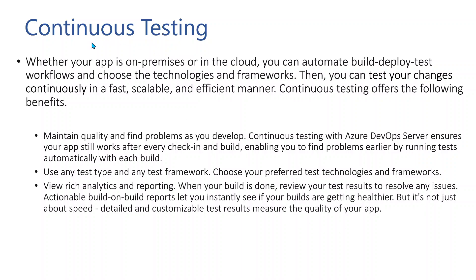Next we have Continuous Testing. As the name indicates, Continuous Testing means you're going to test in an automated fashion. Whether your app is on-premises or in the cloud, you can automate build, deploy, and test workflows, and choose technologies and frameworks of your choice. You can then test your changes continuously in a fast, scalable, and efficient manner. The benefit of Continuous Testing is it will maintain quality and find problems as you develop.